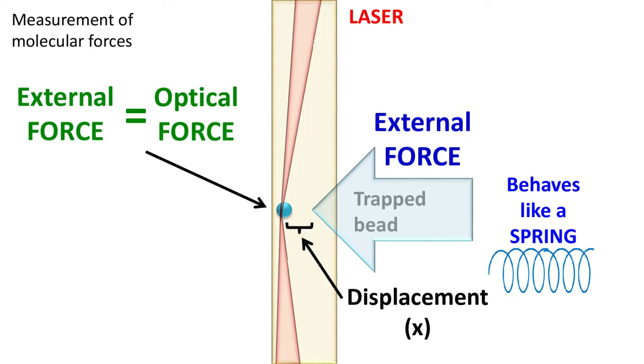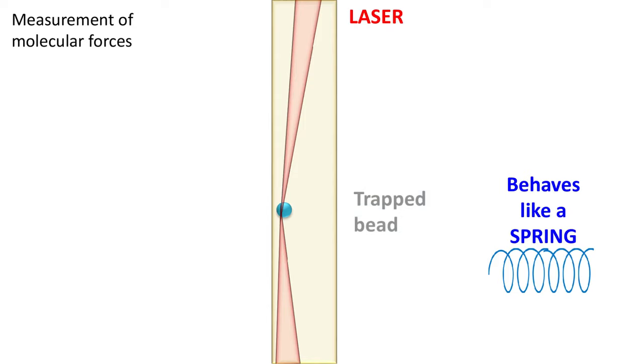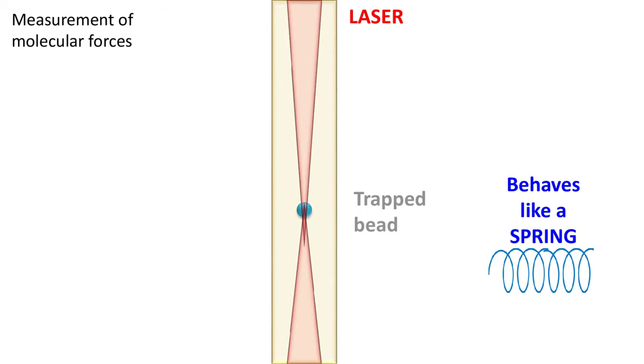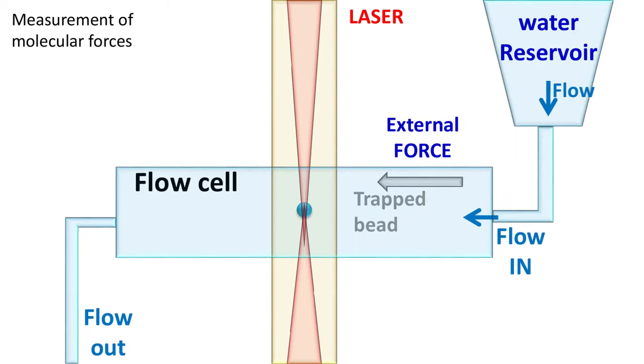If the external force is removed, then the bead will come back to its original position. So, this whole system is behaving like a spring. The external force causes displacement and in its absence, the bead comes back to its original position. This external force is usually applied using a flow cell.